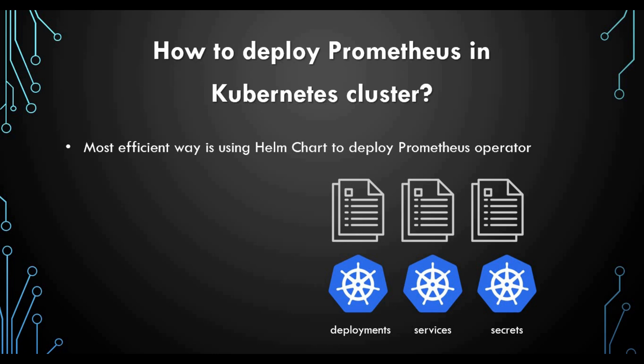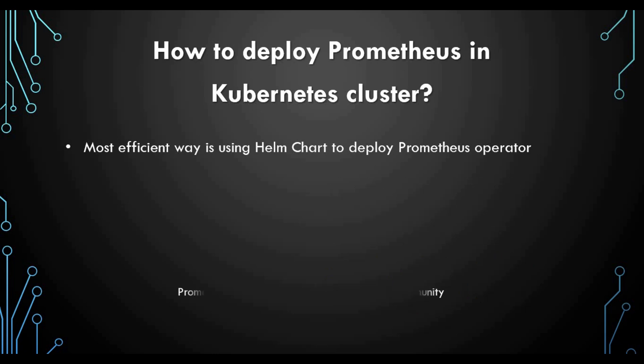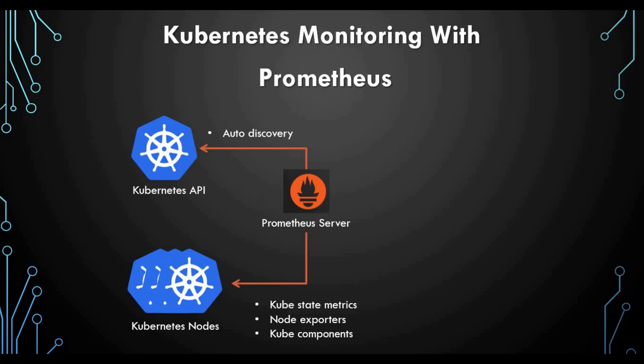Since we have Helm, which is a package manager for Kubernetes, the most efficient way is to use a Helm chart. We already have different Helm charts with pre-defined Prometheus operators, so we can simply run this Helm chart, which is maintained by the Helm community, and we'll have Prometheus running on Kubernetes. You don't have to manually create all the YAML files. We already have Helm charts which we can use to run the Helm operator, and a Helm chart is the better way to do it.